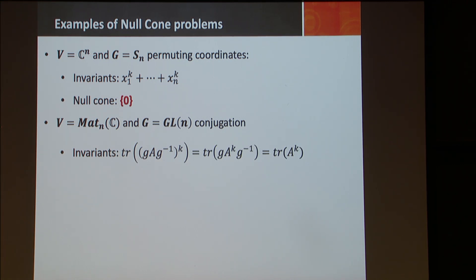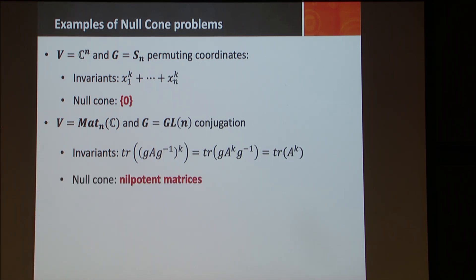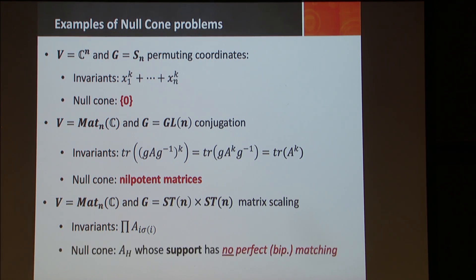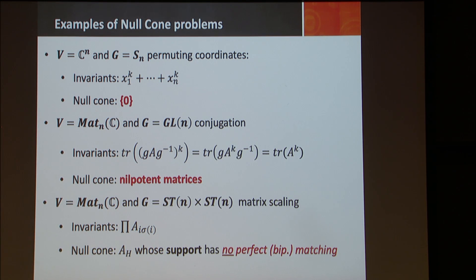Now let's see the conjugation action. We saw that the invariants are traces of powers of matrices. So what is the null cone here? It's the set of nilpotent matrices — all matrices that, when you take powers, eventually become zero.